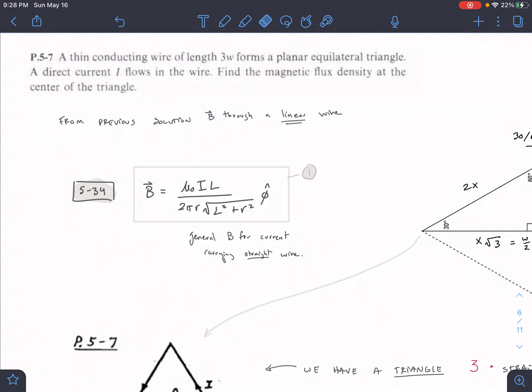Okay, so for problem 5-7, we have a thin conducting wire with a length 3w that forms an equilateral triangle. We have a direct current i that flows through the wire, and we're trying to find the magnetic flux density at the center of the triangle.